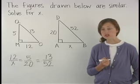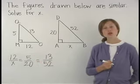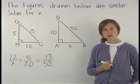Using the first proportion, 12 over X is equal to 5 over 20. We can solve for X using cross products.